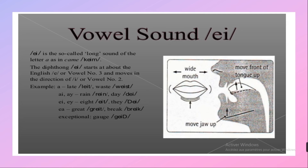Now let's move on to the sound /eɪ/. /eɪ/ is the so-called long sound of the letter A, as in 'cake'. The diphthong /eɪ/ starts at about the English /ɛ/ vowel and moves in the direction of /iː/. Examples: late, rain, ate, great.